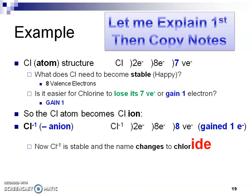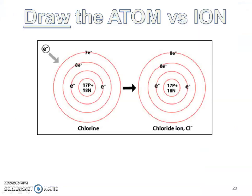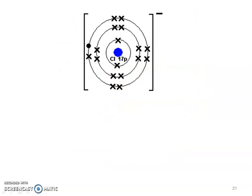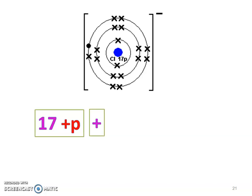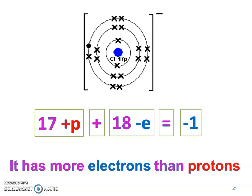That gaining of one electron changes the name: chlorine becomes chloride — very important. Pause and copy these notes. Drawing the atom versus the ion: the chlorine atom has three energy levels and so does the chloride ion, but the atom has seven electrons on the outer level and the ion has eight — that's the key difference. Why is it negative one? It has 17 protons — positively charged, always stays the same — but as an ion it gained one electron, so it has 18 electrons. 17 positive protons plus 18 negative electrons equals negative one.